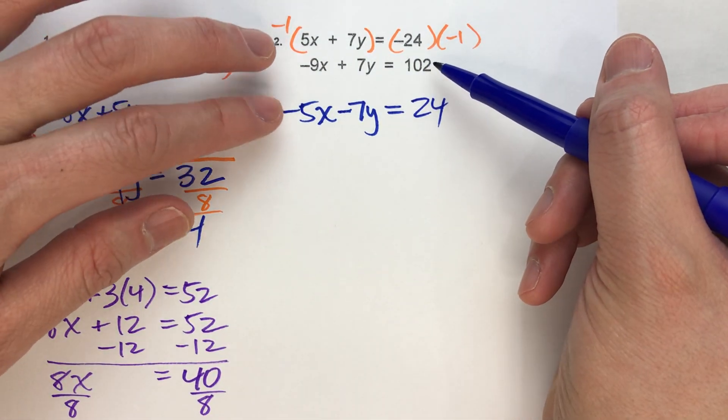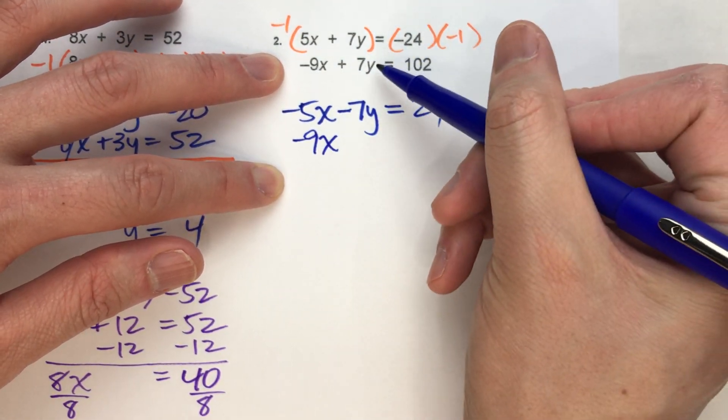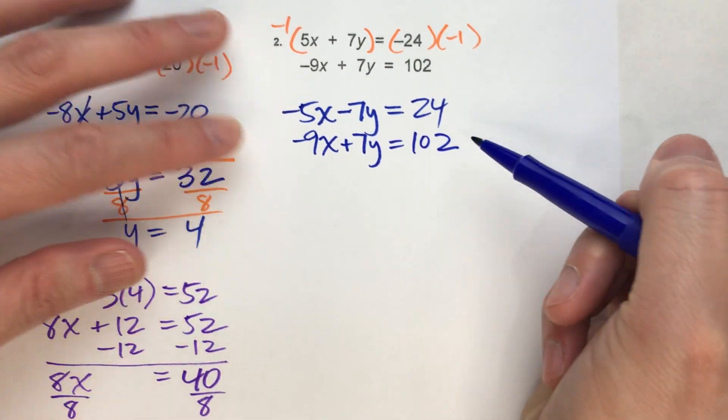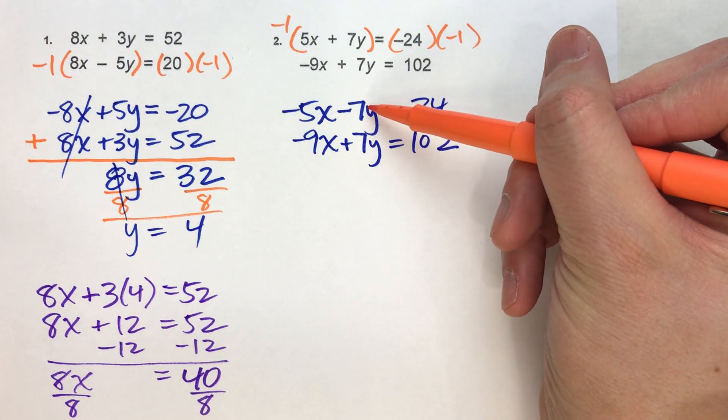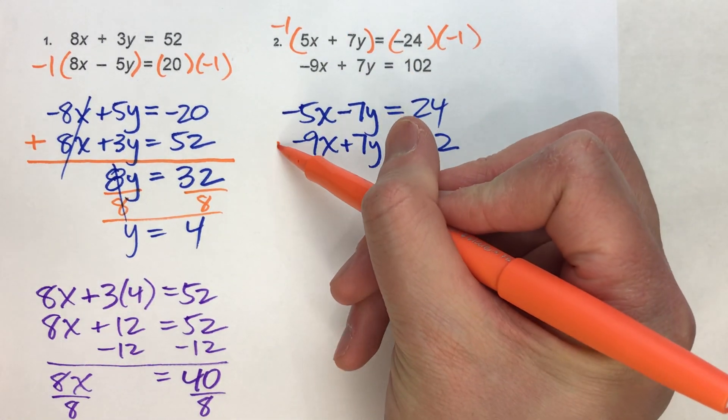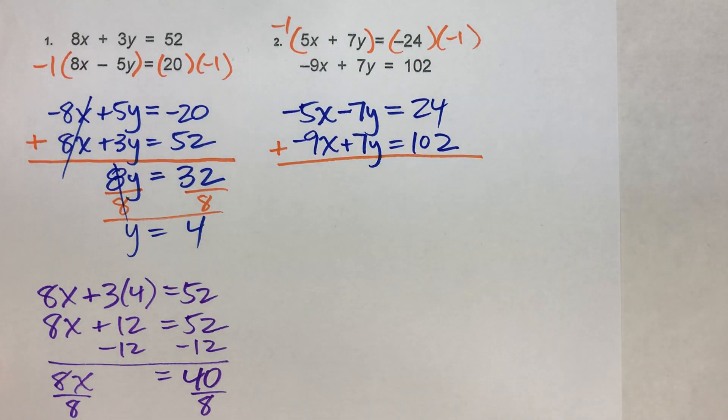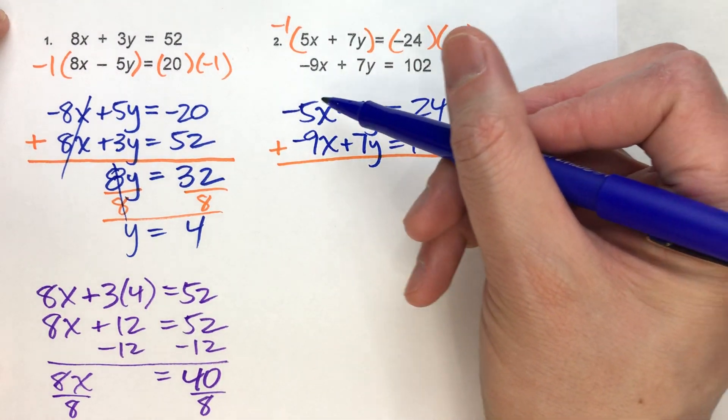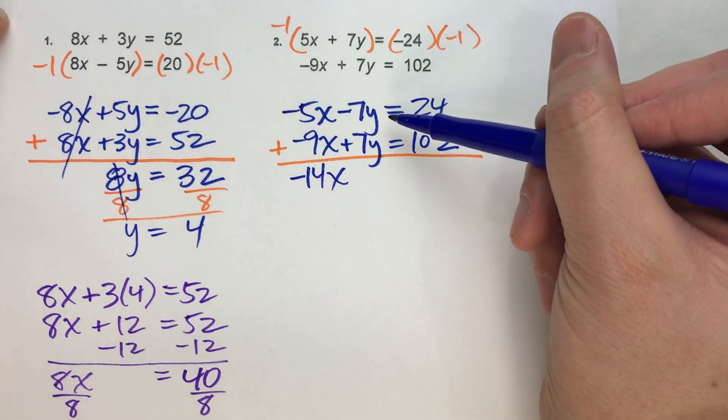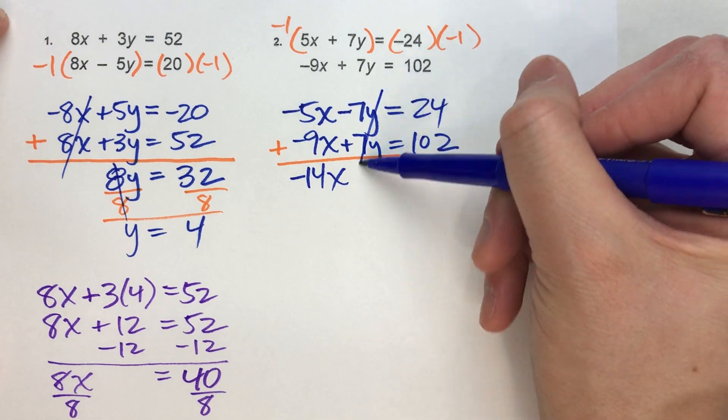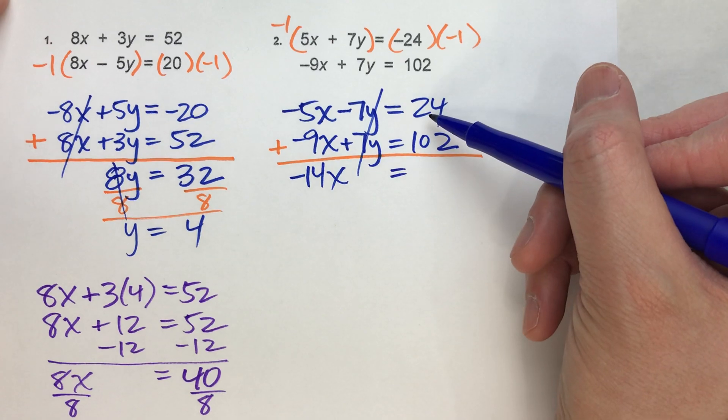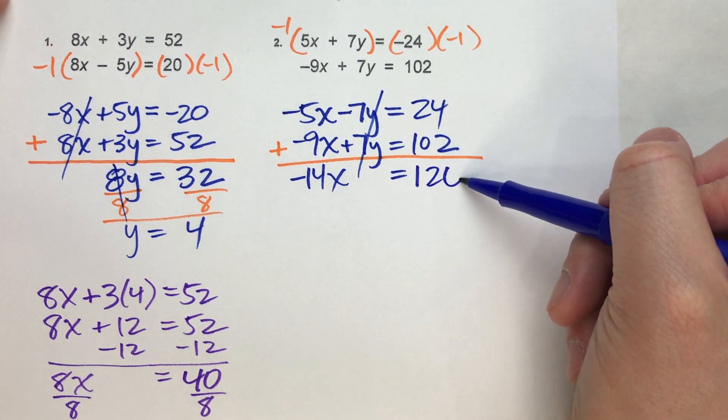Now let me drop down my other equation. I'm not going to change the other equation because it's already in the form I want it to be. Notice I've got -7y and positive 7y. And since they have opposite signs and they're the exact same number, by adding them together, I can eliminate all the y's. -5x's plus -9x's is -14x's. -7y plus 7y. Nothing. Zero. No y's. Equals drops down.